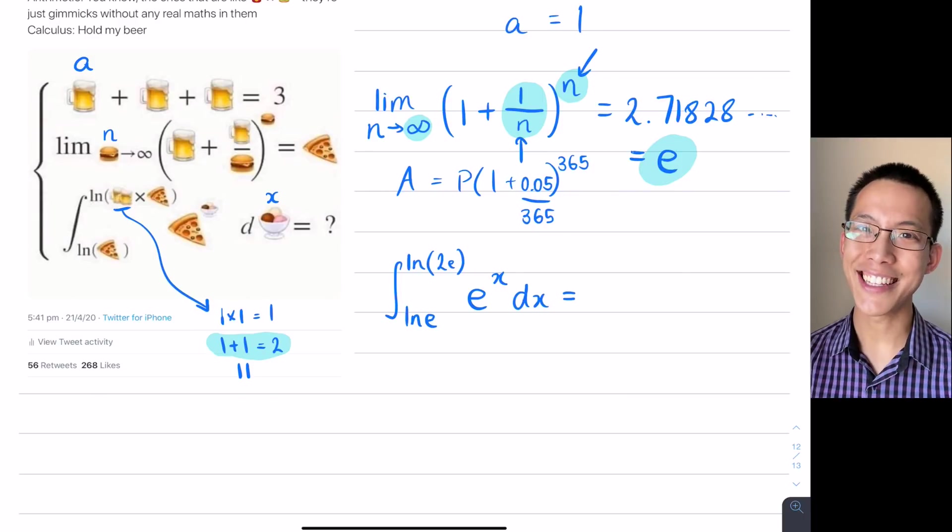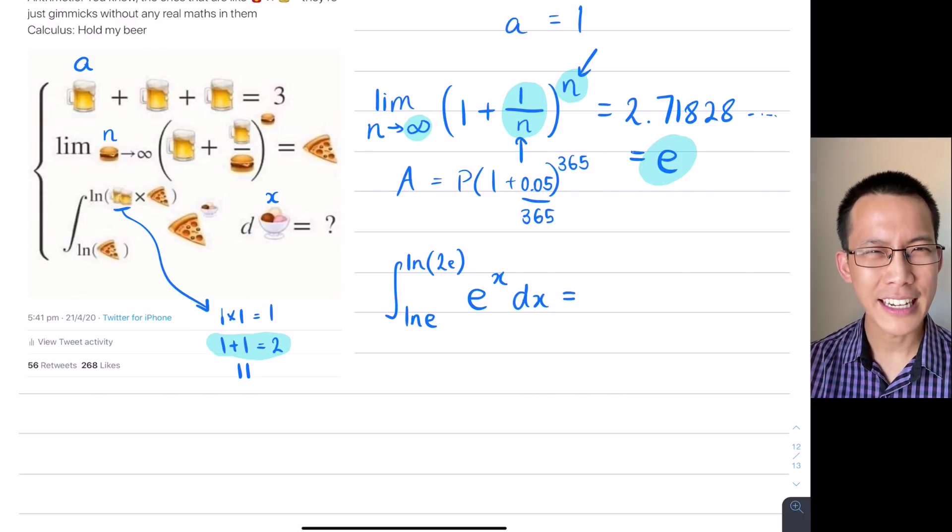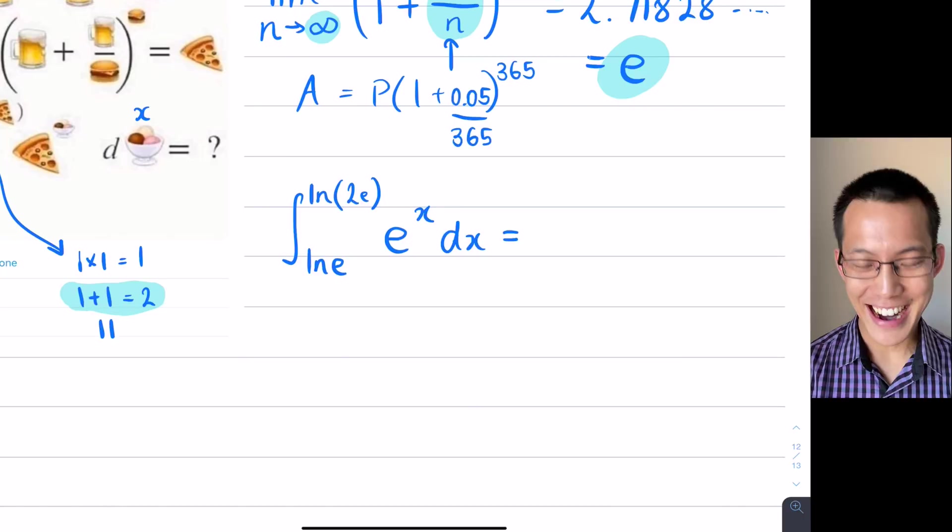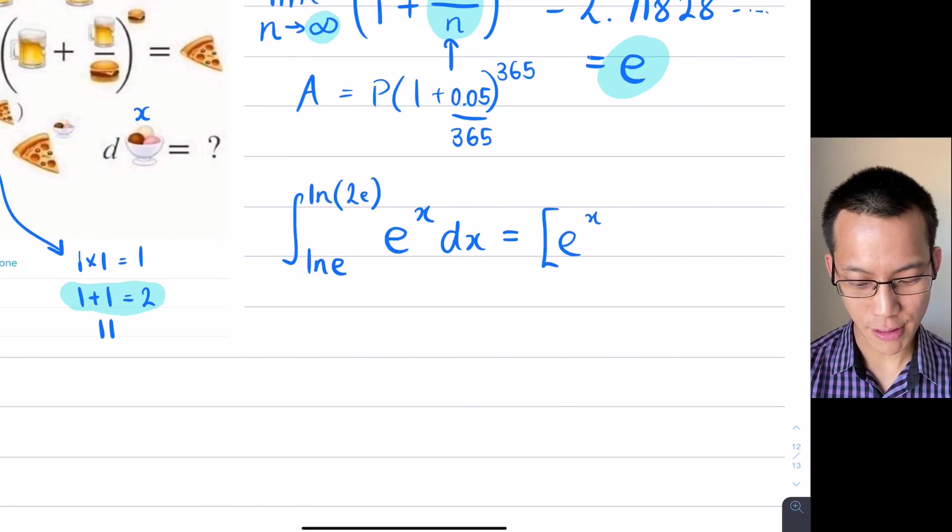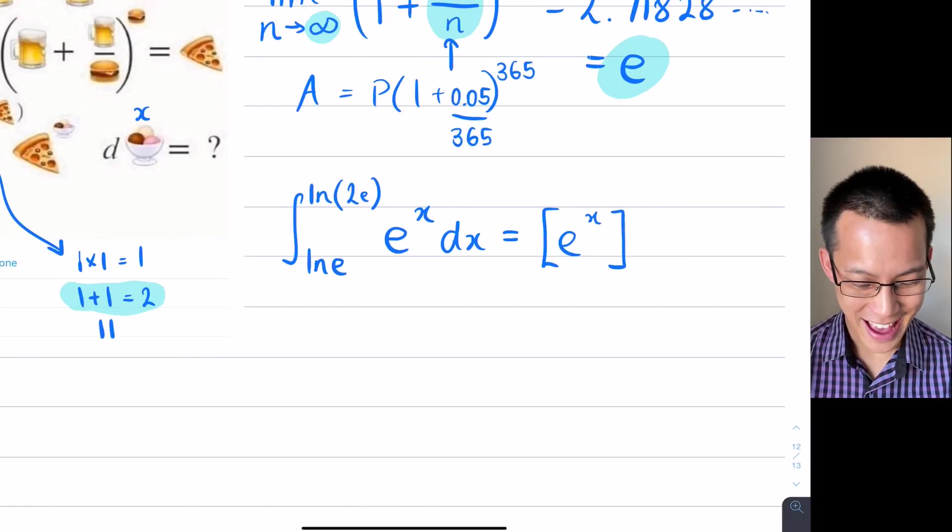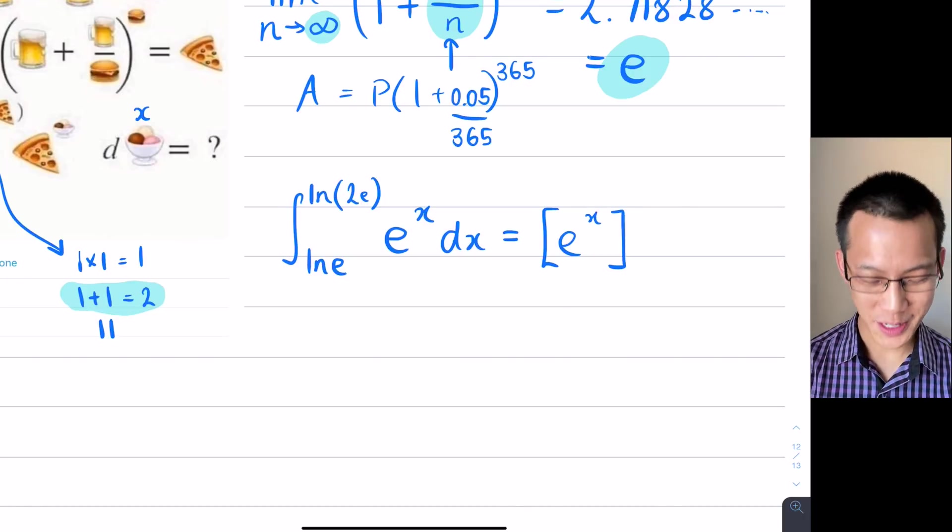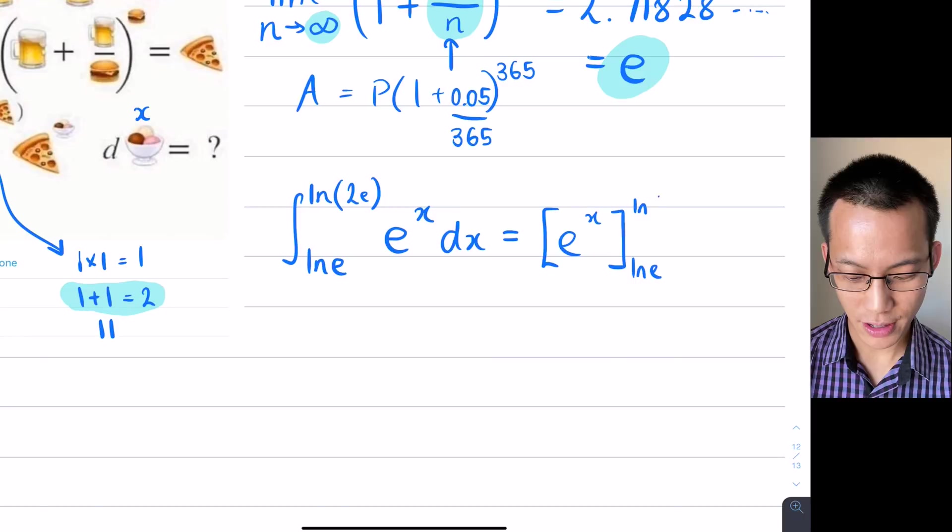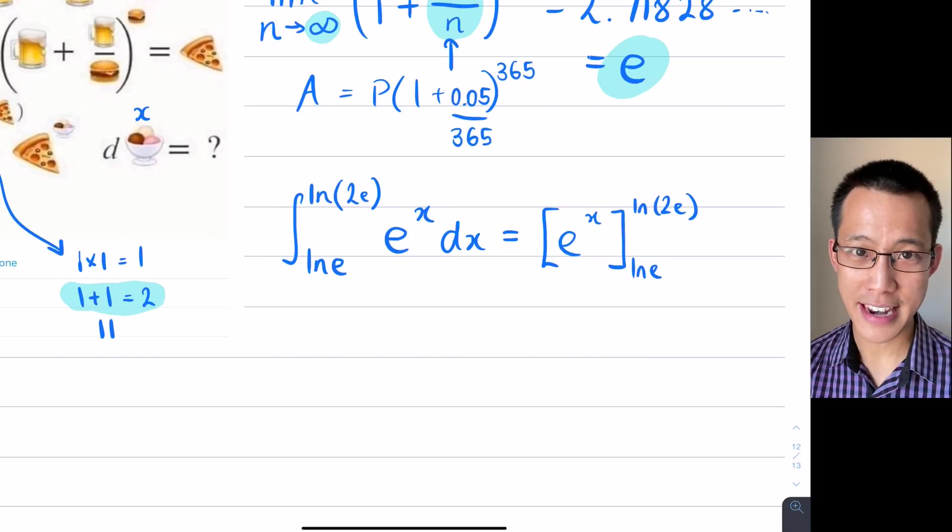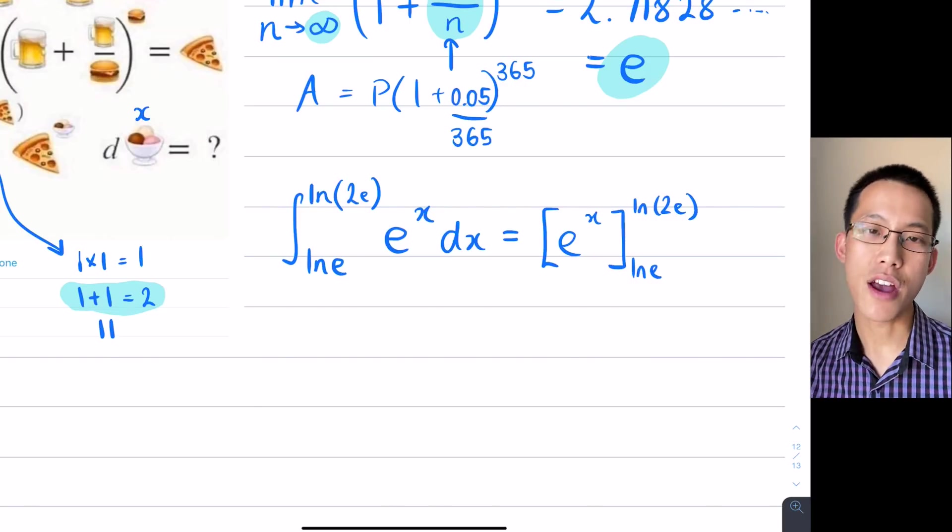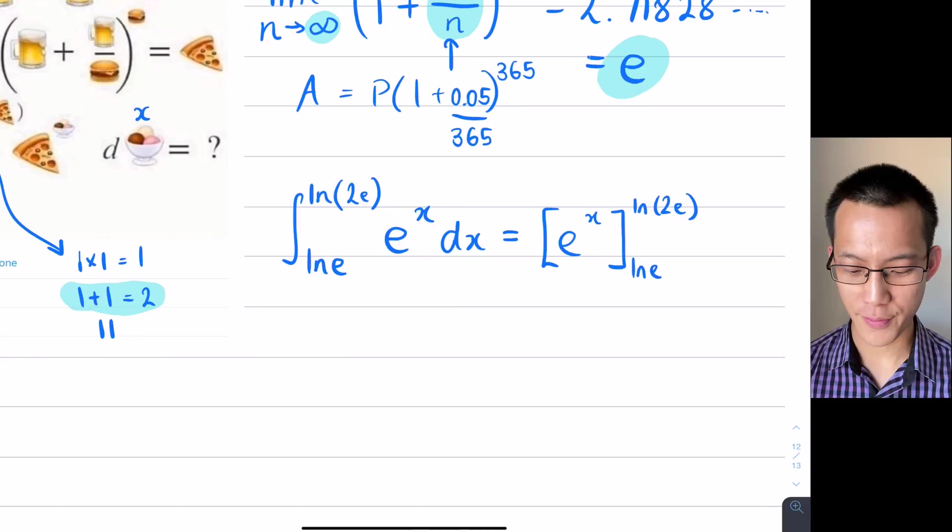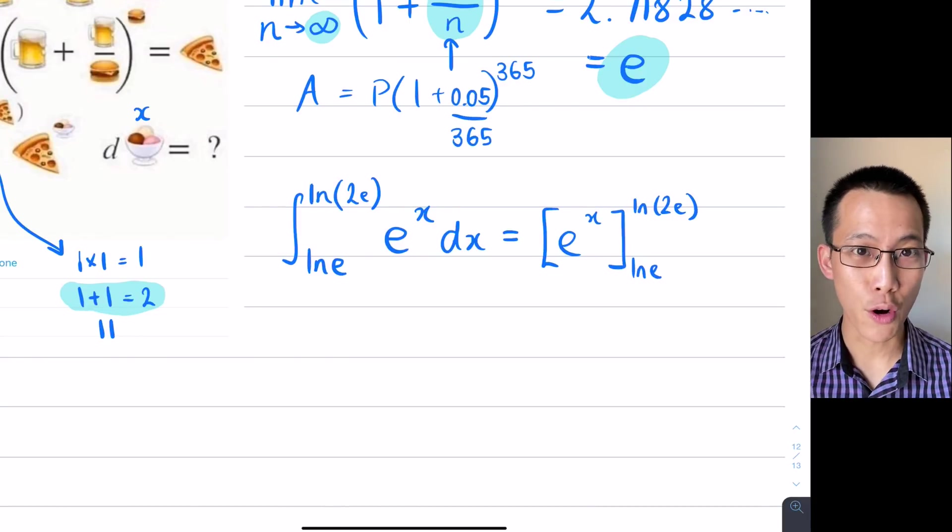When you differentiate e to the x, you get e to the x, and if you integrate e to the x, it'll be e to the x plus a constant. Okay, so it's a very special function. The vast majority of functions out there don't do this. So, when I integrate e to the x, my primitive function is e to the x. This is a definite integral, that's why I don't need to worry about the constant of integration for those of you following along at home. And then I'm going to evaluate it at the bottom and the top limits. So, log e and log 2e. Now, some of you will be asking, Eddie, why did you not simplify the natural log of e? That's the log base e of e, that's just equal to one. Well, I could, but as you'll see in a second, it doesn't end up helping us very much, or it's just as useful to leave it in its current form. Let me show you why.